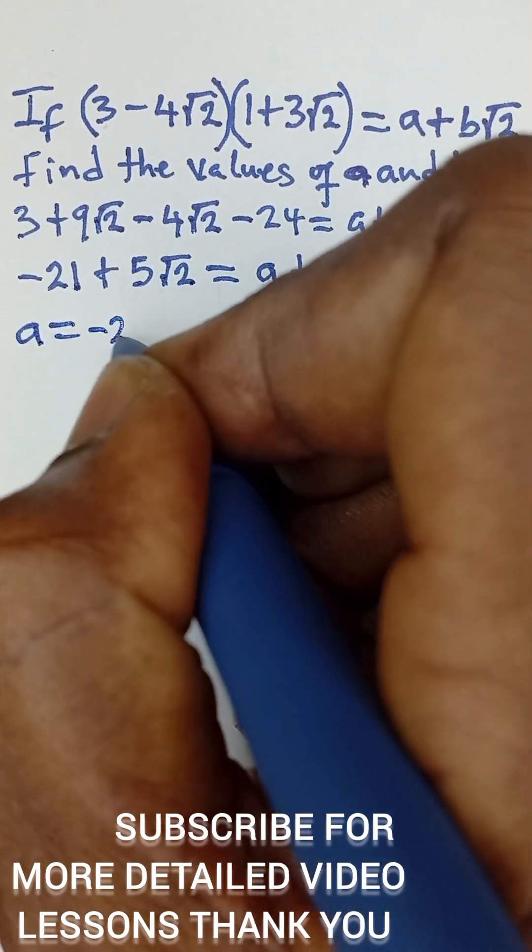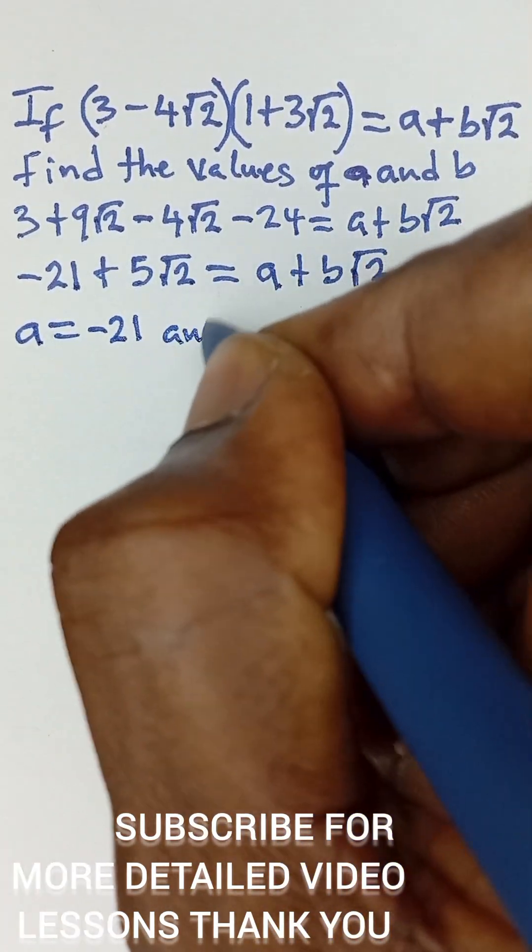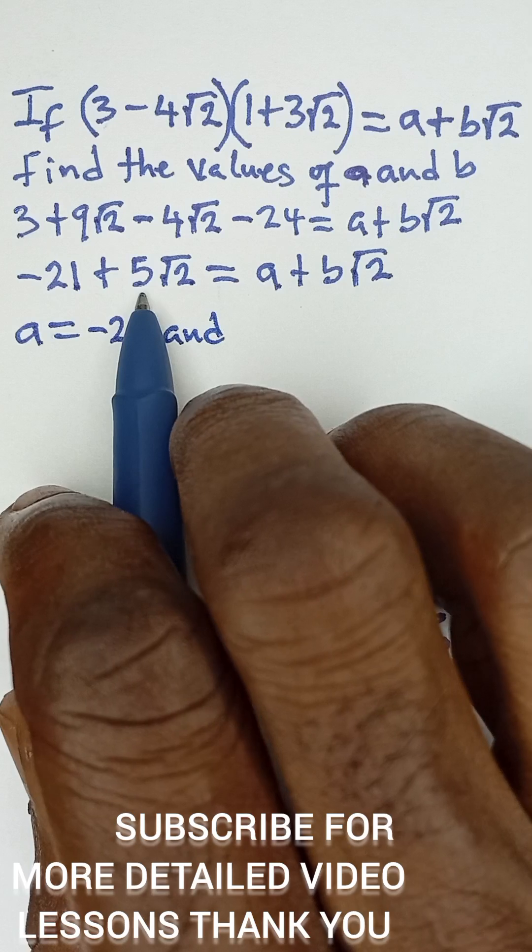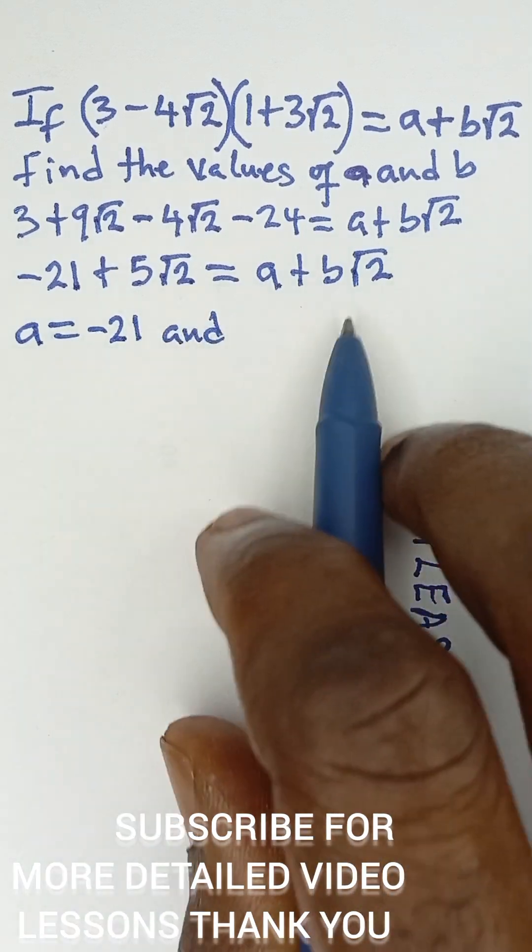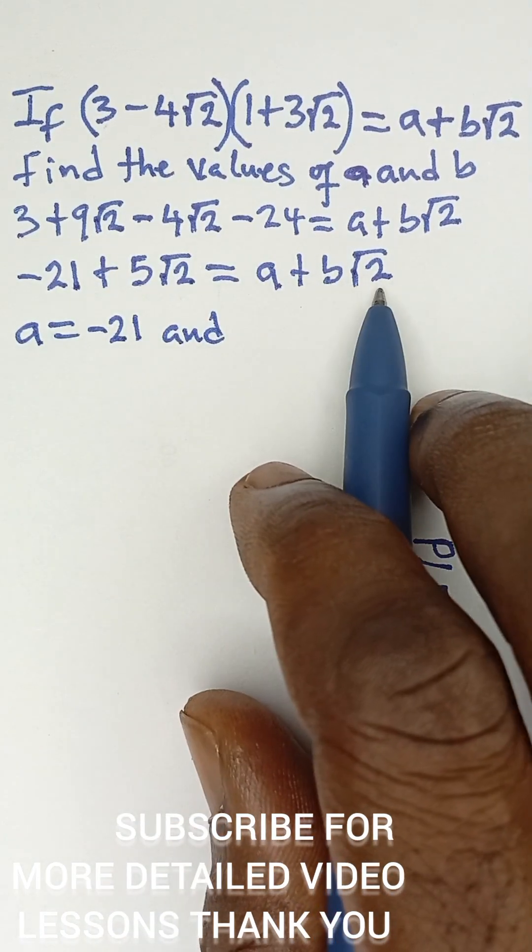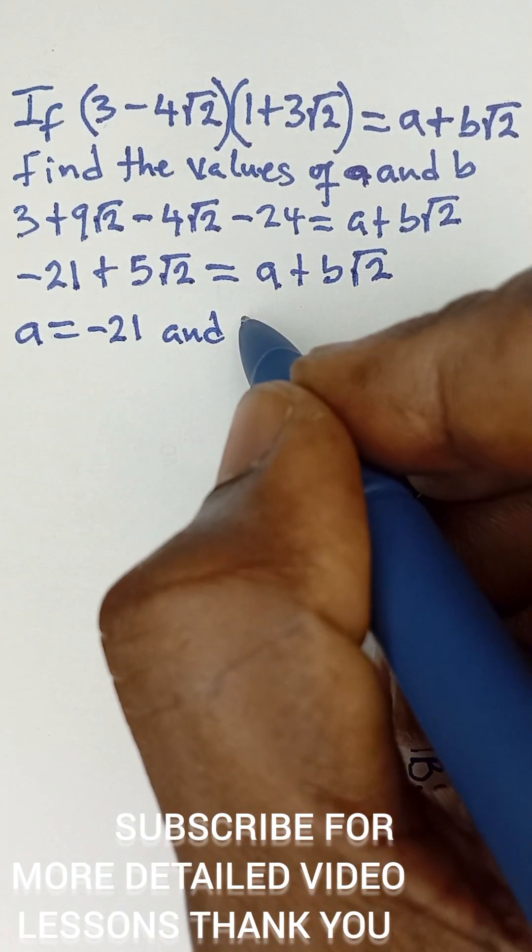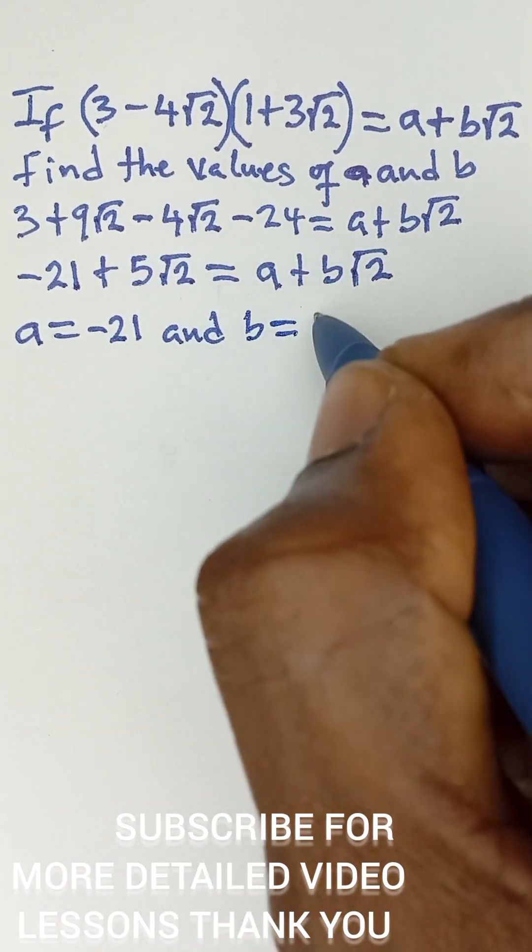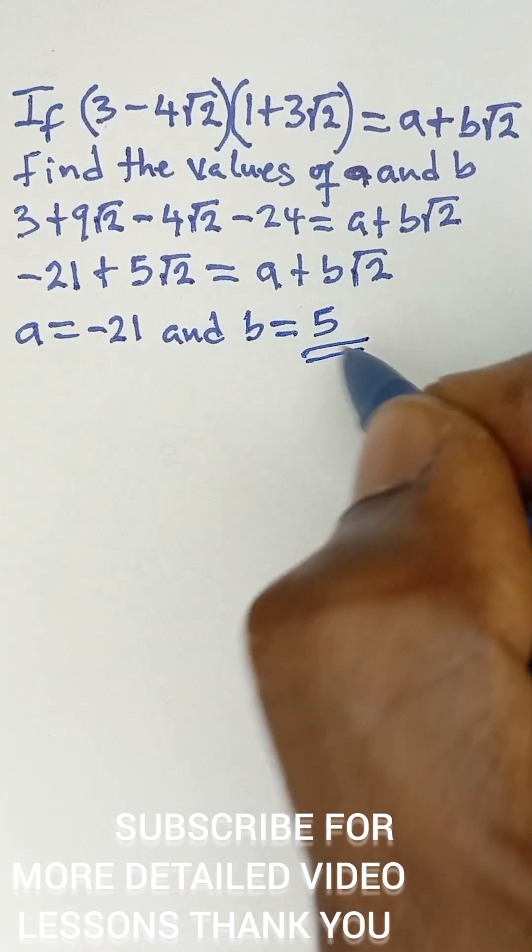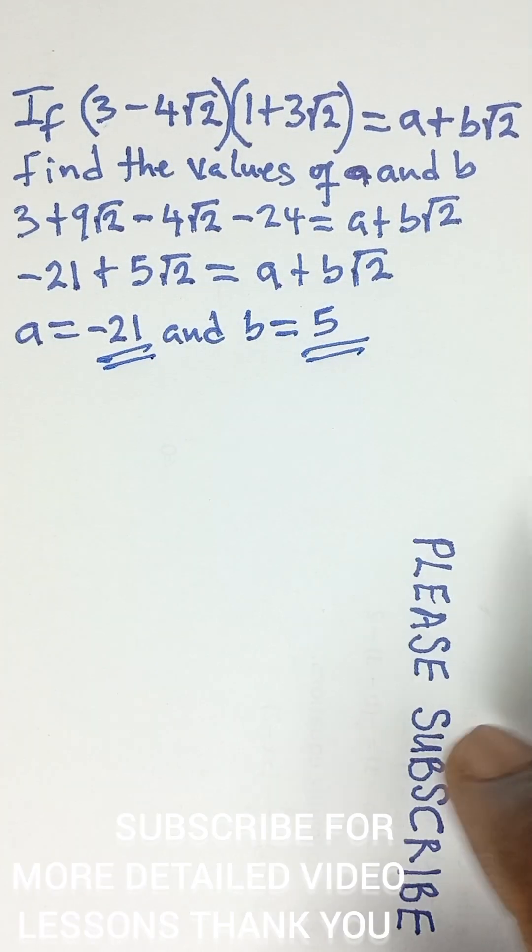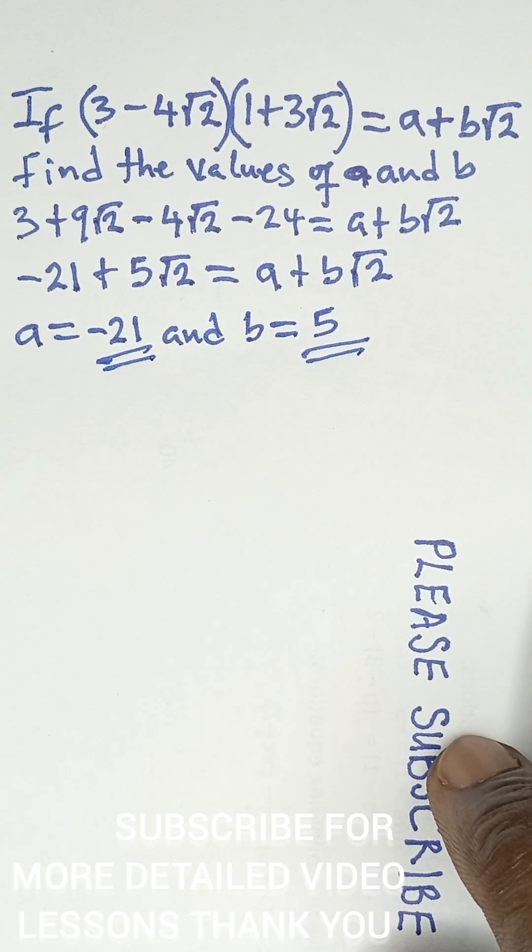And b, that is this term attached to √2, if it is attached to √2 here—so b and 5 are the same—so finally we say b is equal to 5. So these are the final answers.